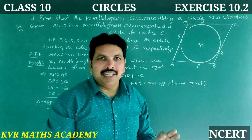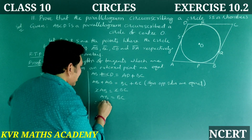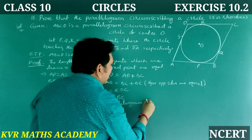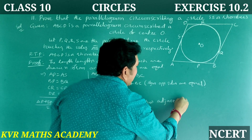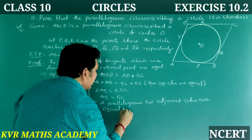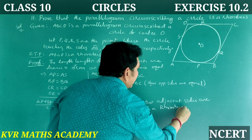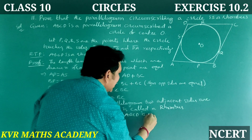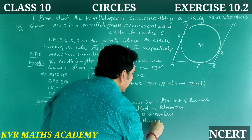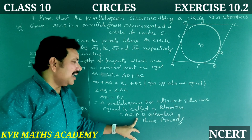A parallelogram in which two adjacent sides are equal is called a rhombus. Therefore, ABCD is a rhombus. Hence proved.